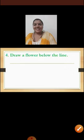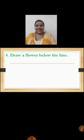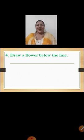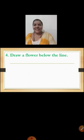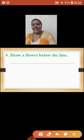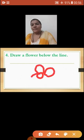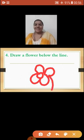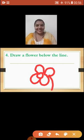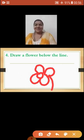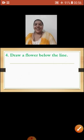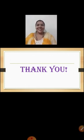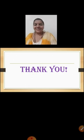Let's see the next picture. Now children, can you see a line here? Yes, we can see a line on the screen. And you are going to draw a flower below the line. Let's start drawing a flower. I hope children, you will draw better than the teacher. Are you enjoying children? I hope you all must have understood the activity. Thank you so much. Thank you.